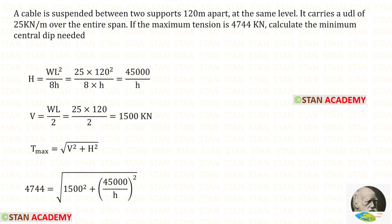We know the formula to find the maximum tension: root of V square plus H square. The maximum tension is 4744. Let us apply the value of V. For H, let us apply this expression.